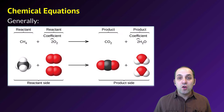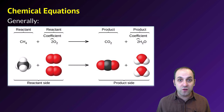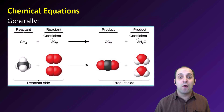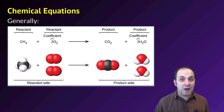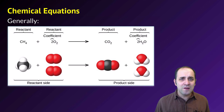The stuff on the left side of the arrow is called the reactants, and the stuff on the right side is called the products. The arrow represents the reaction — the reactants react over the course of that arrow and become the products. It's important to understand the arrow is not an equal sign, though it's often thought of that way mathematically.